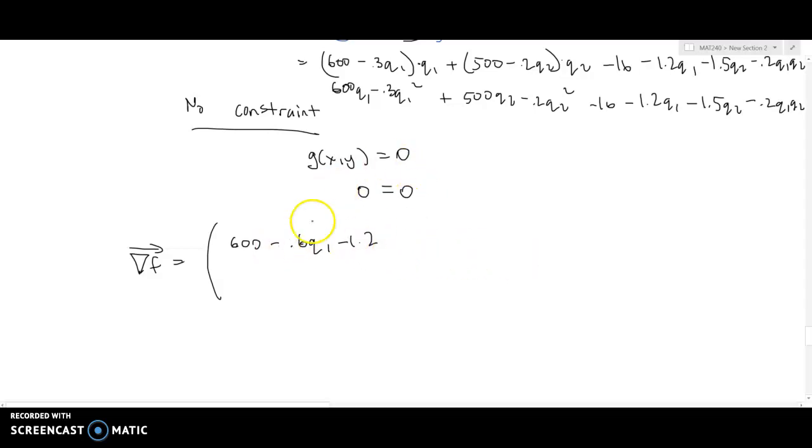We got cut off in the last video, but 600 is the constant. If we take the derivative with respect to q1, treating it just like we would x, we have 600 minus the derivative of this term, which is 0.6q1. All the q2 terms and the constants are 0.